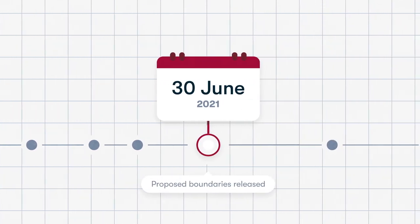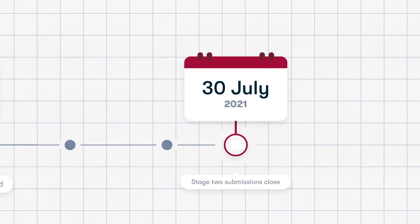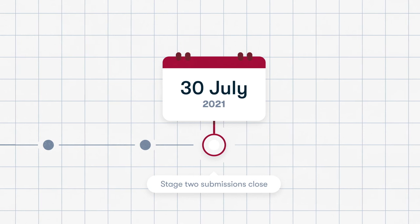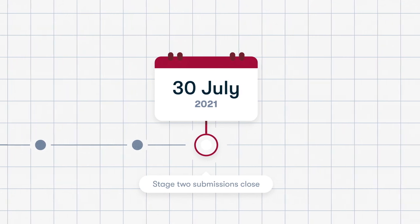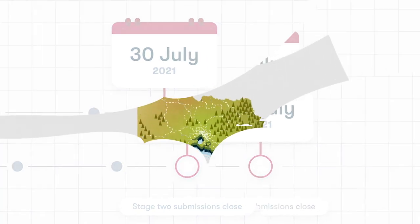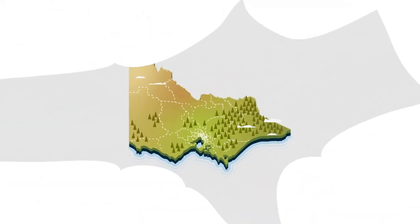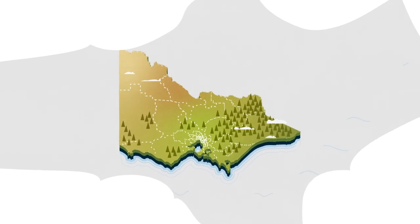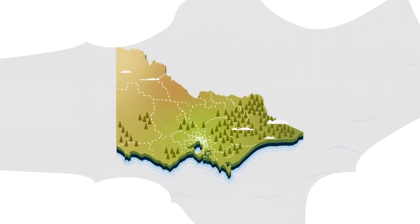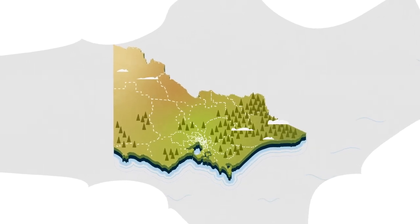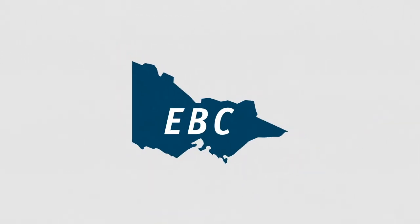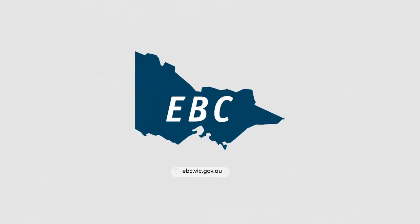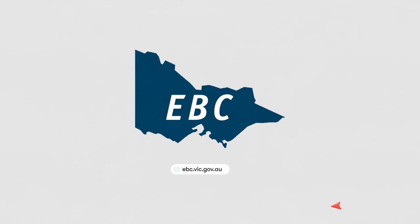Victorians will then have a month to make a Stage 2 submission about the proposed boundaries. The final boundaries will be released in October — they will be the boundaries for the 2022 state election. For more information, visit ebc.vic.gov.au.